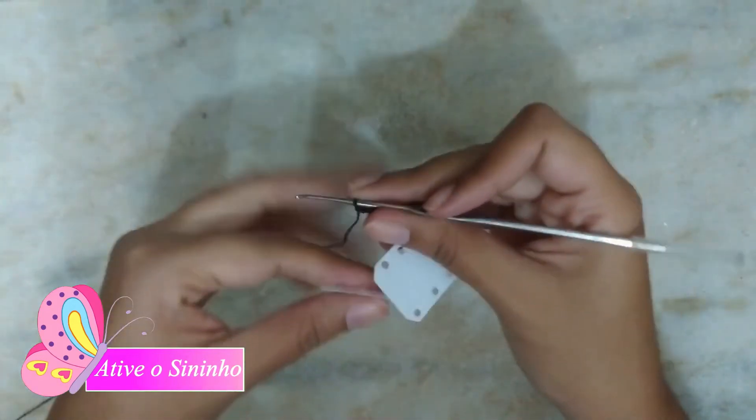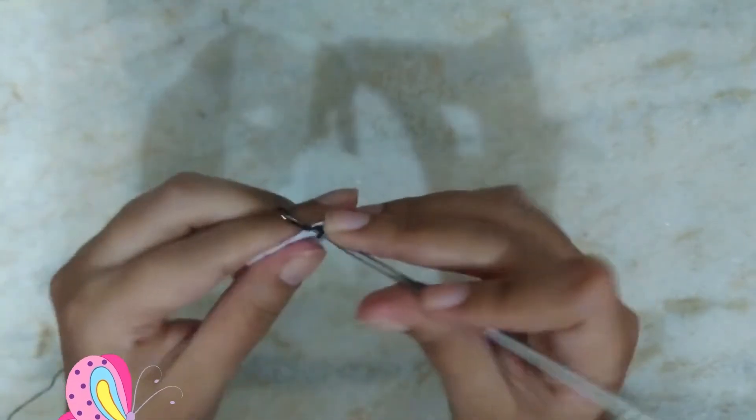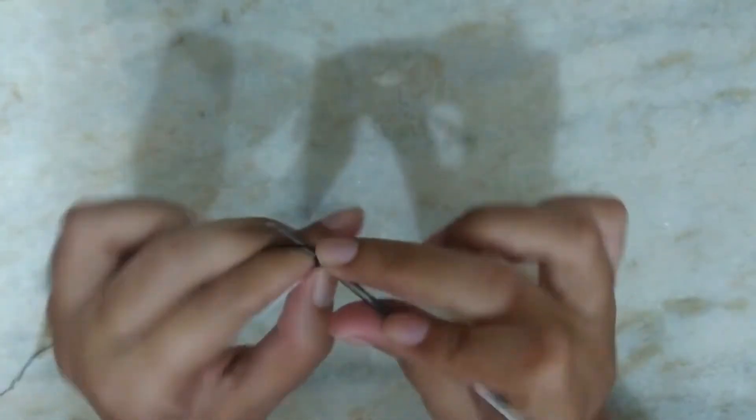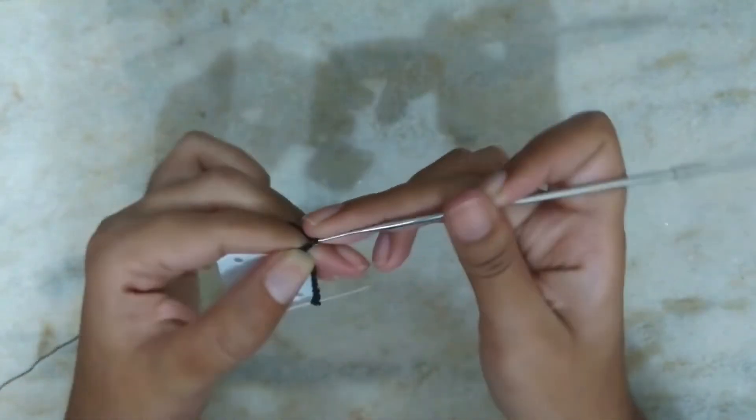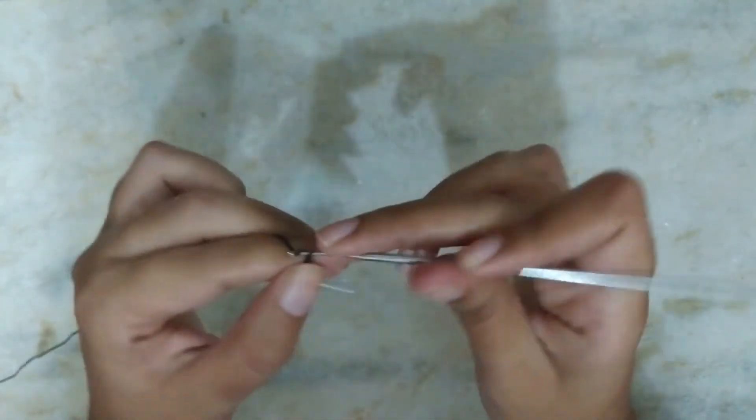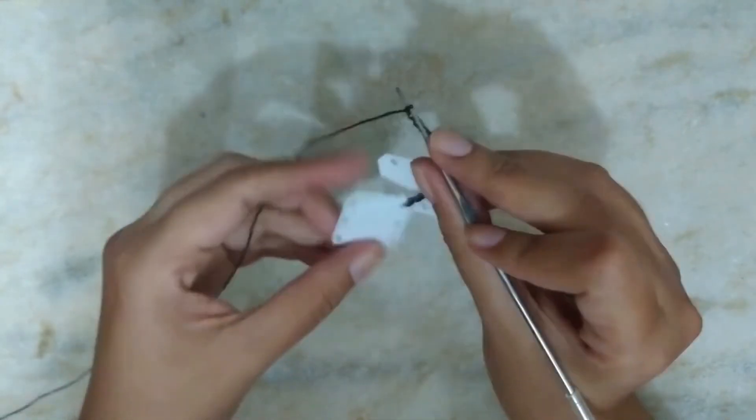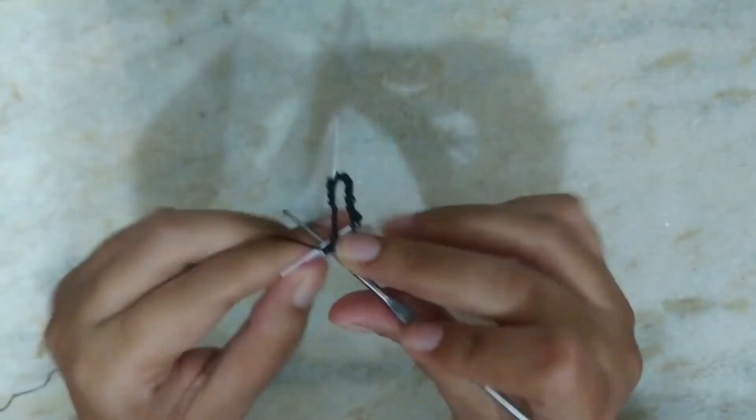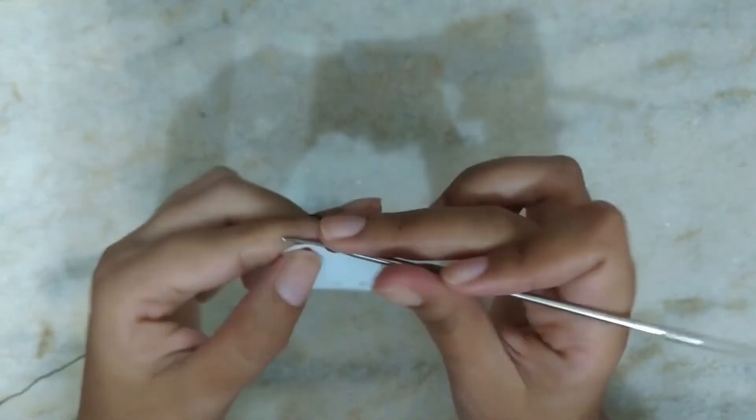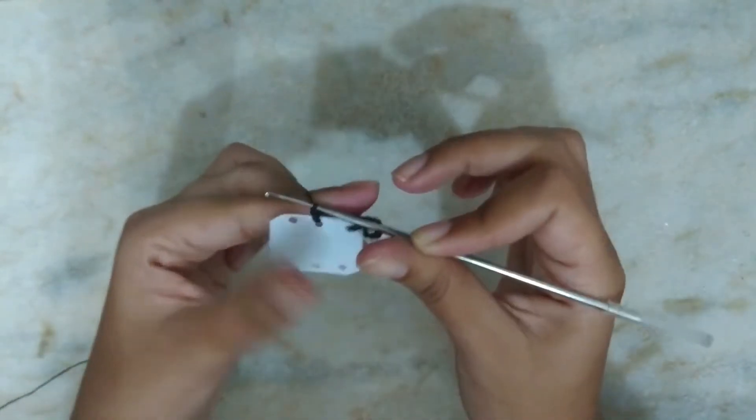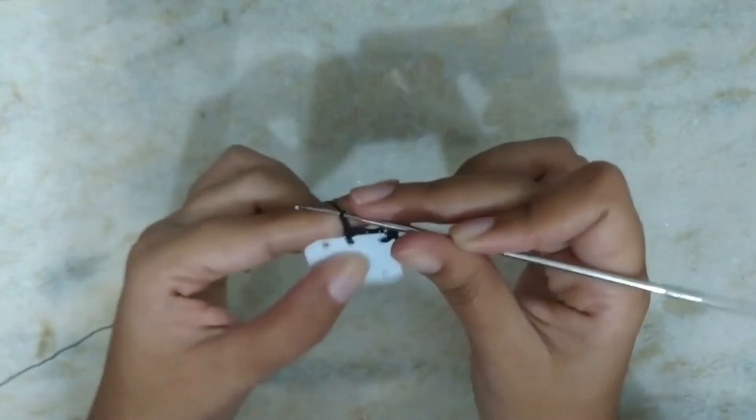I come to this other part and make a low stitch. Now I make eight chain stitches. And I come to this other part here. I come and make a low stitch.